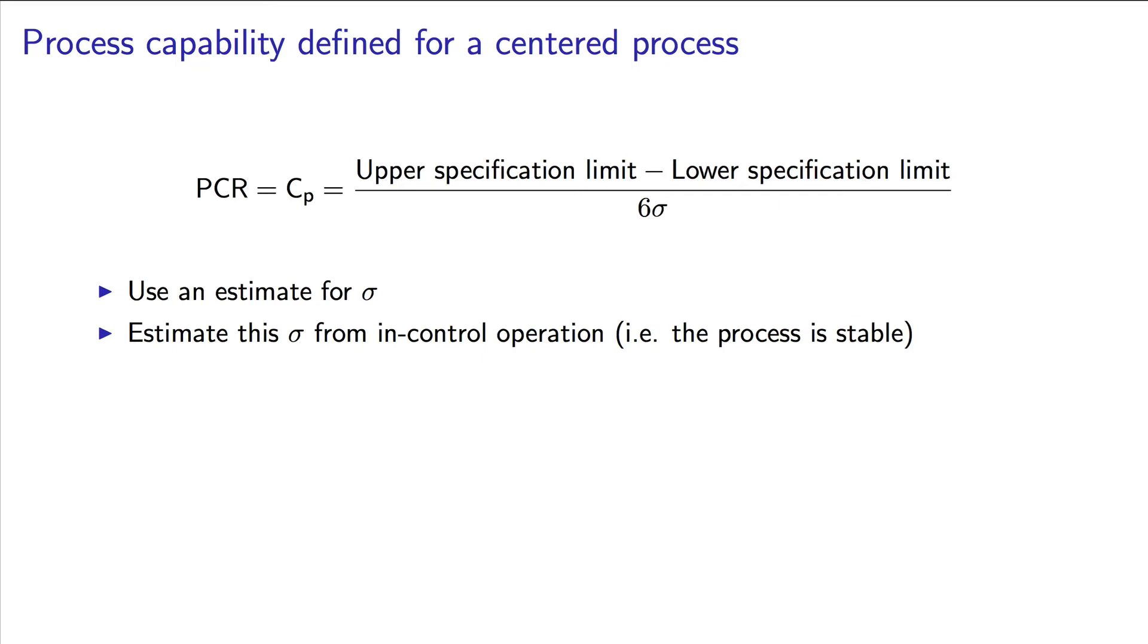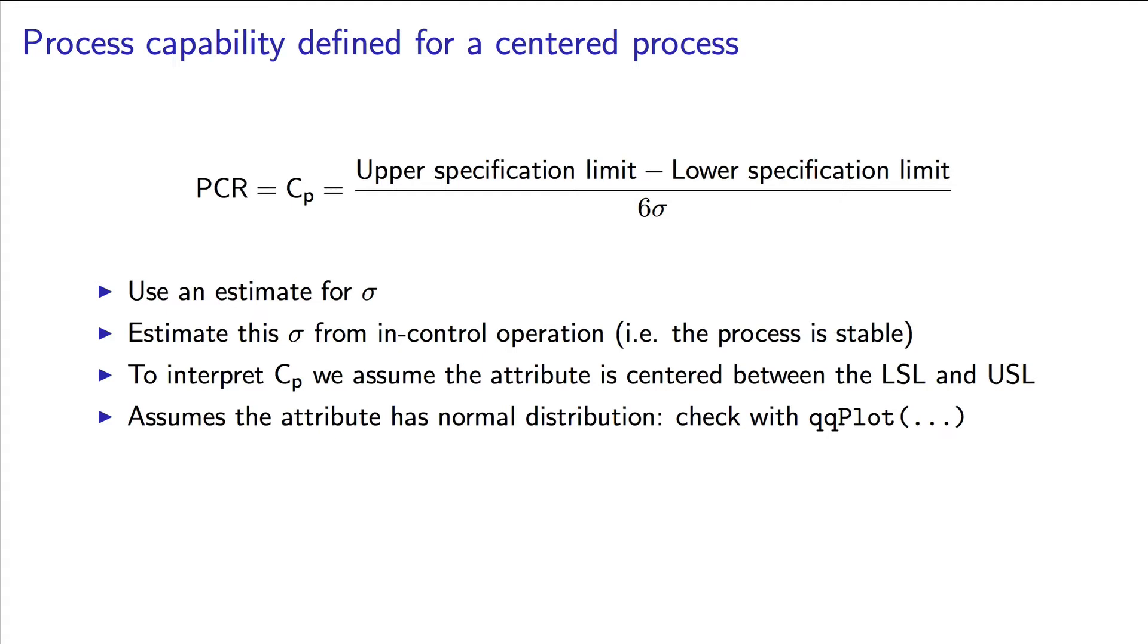Let's also be specific about how sigma is estimated. Sigma is estimated by taking data from your process when you know that it is stable. You can prove that by using a Shewhart monitoring chart and only using data from in-control operation. In other words, there should be no special causes happening that you are aware of. To interpret the process capability ratio, we have to make the additional assumption that the process is exactly centered between the upper and lower specification limits. And secondly, that the attribute you're measuring has a normal distribution. That's easy to check. We've used the QQ plot for that in the past. So you sub in the upper and lower specification limits and divide by six times the estimated standard deviation, and you get a single process capability ratio number for that attribute.